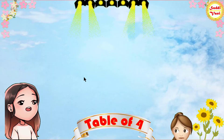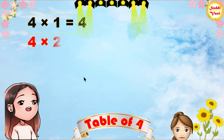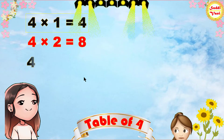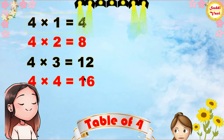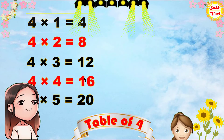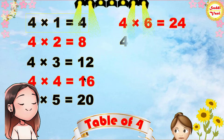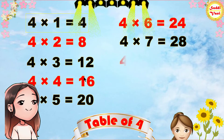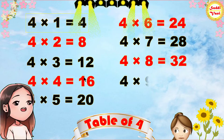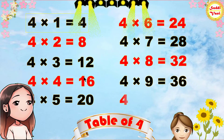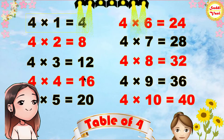Once again: 4 1s are 4, 4 4s are 16, 4 7s are 28, 4 8s are 32, 4 9s are 36, 4 10s are 40.